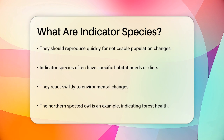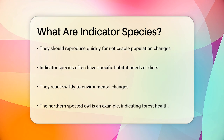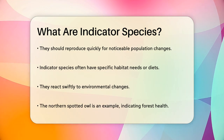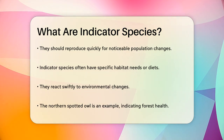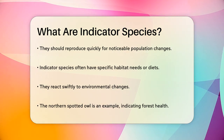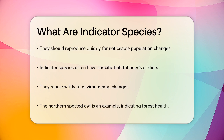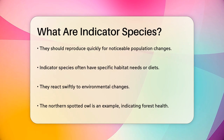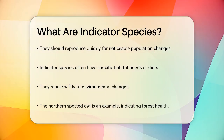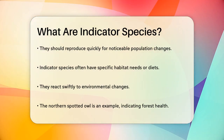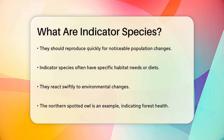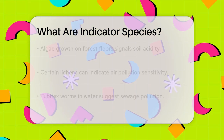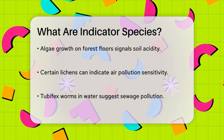Let's take the northern spotted owl as an example. This owl only nests in old-growth forests and feeds mainly on small rodents. If its population starts to decline, it could indicate that the forest health is deteriorating, perhaps due to logging or lack of nesting sites.